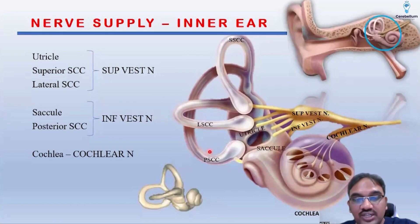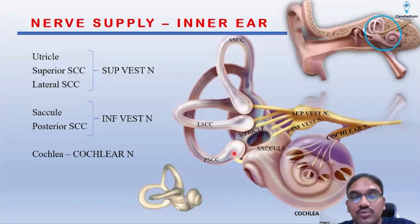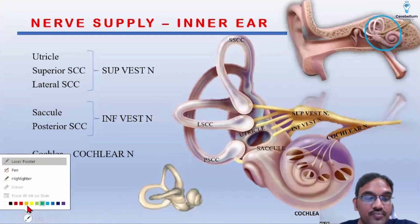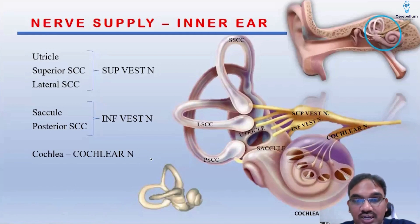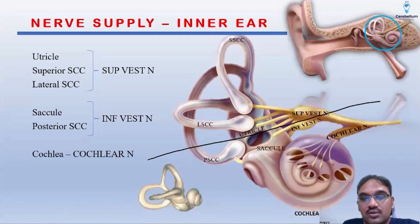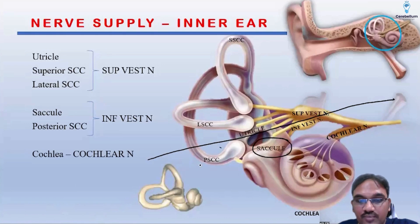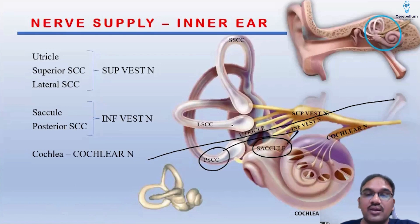You can see the posterior semicircular canal, and its ampullated end is present a little bit down below. So just draw a line here. From the saccule and from the posterior semicircular canal, the inferior vestibular nerve will be collecting the information.